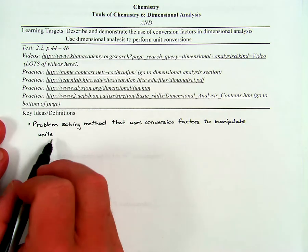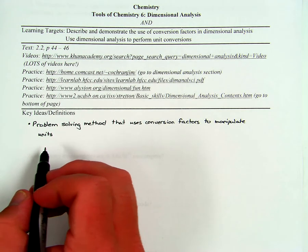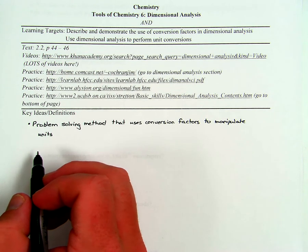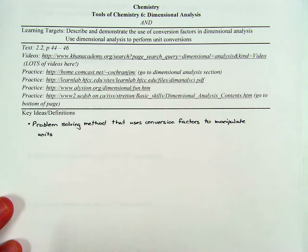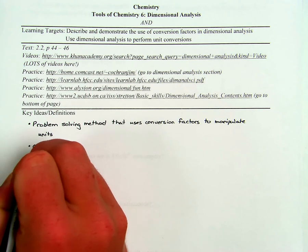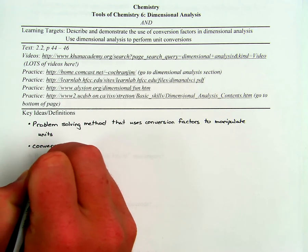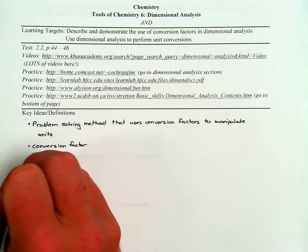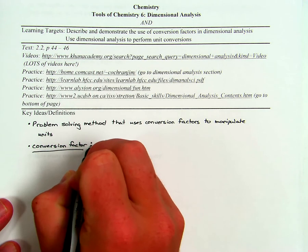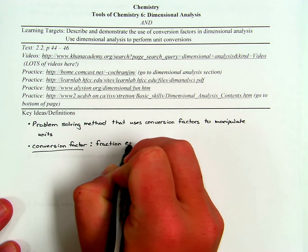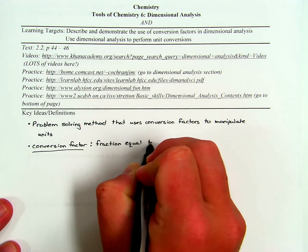A unit you might consider a label. For example, 17.4 meters — the unit there would be meters. Another thing you might be wondering is: what is a conversion factor? A conversion factor, very simply, is a fraction equal to one.